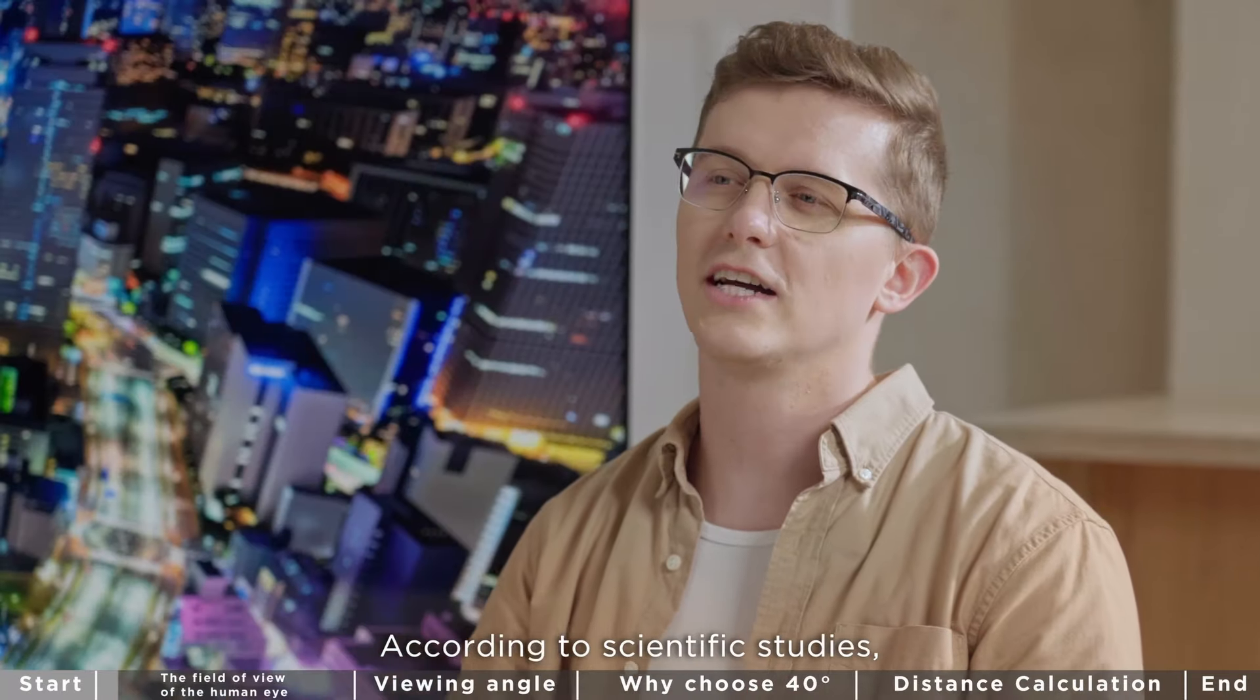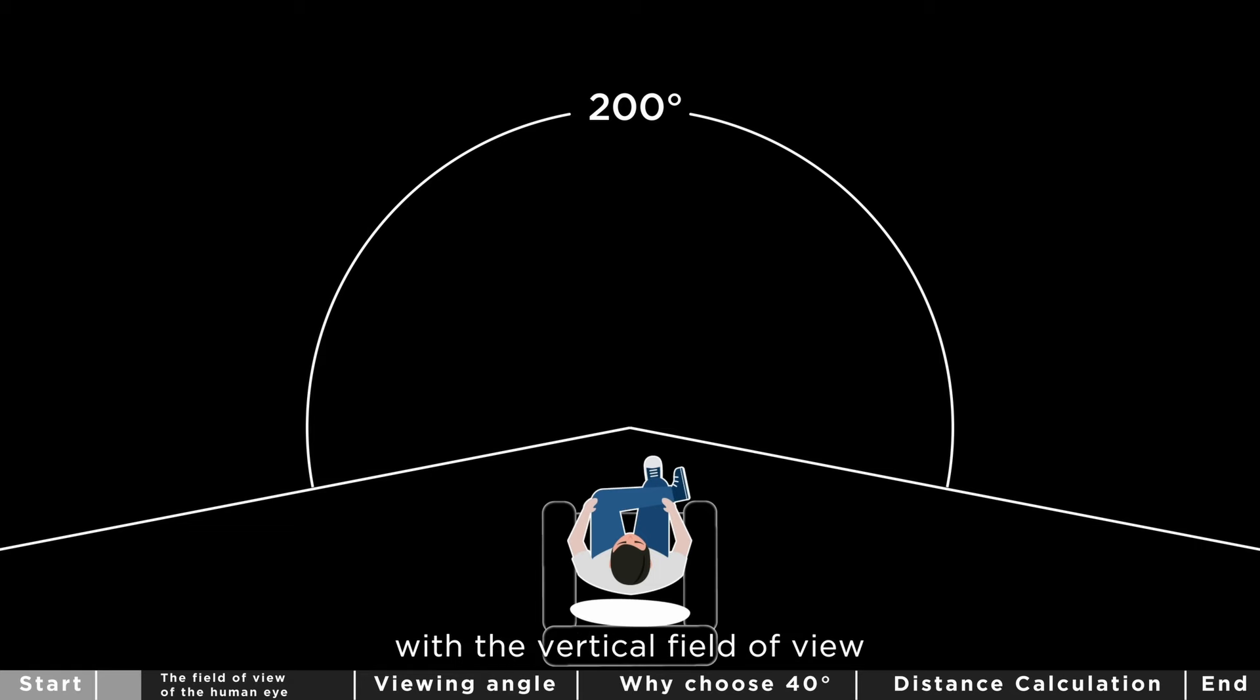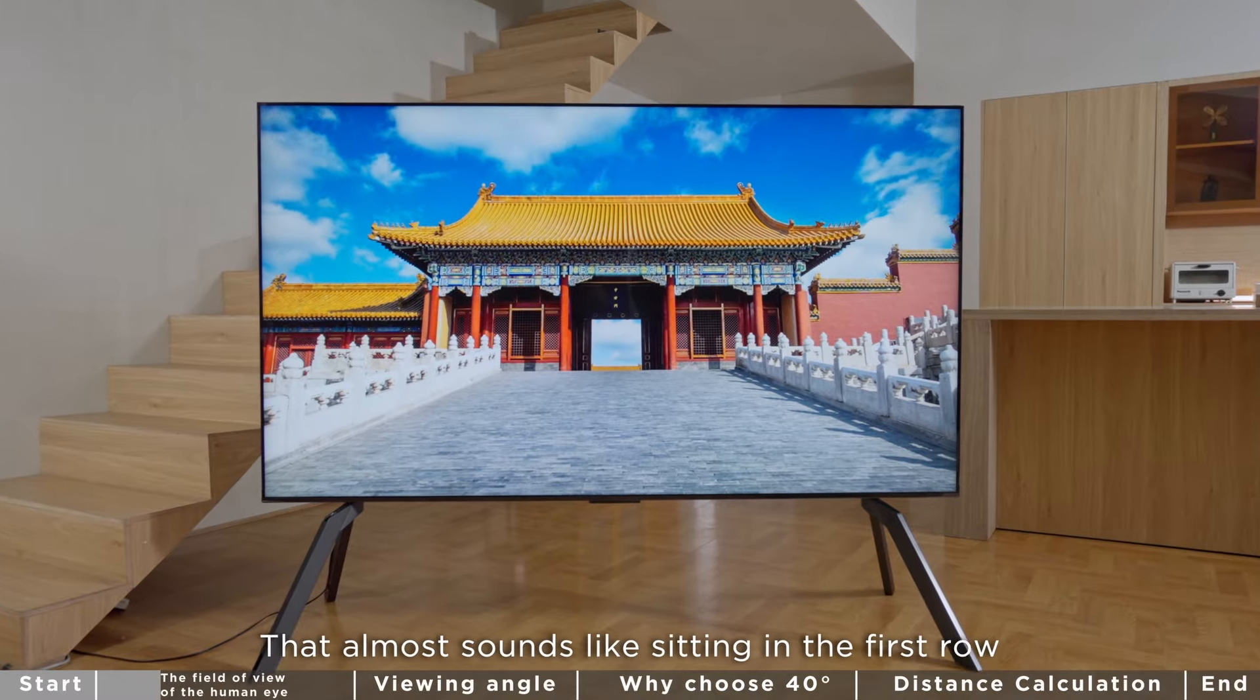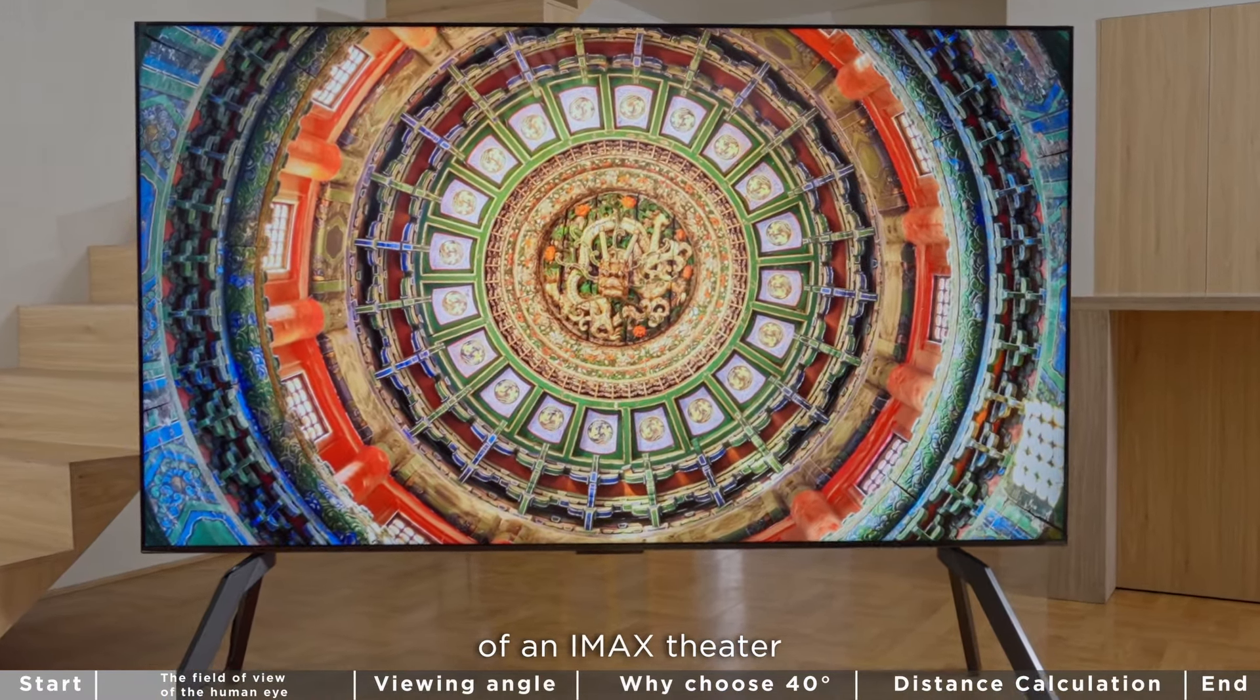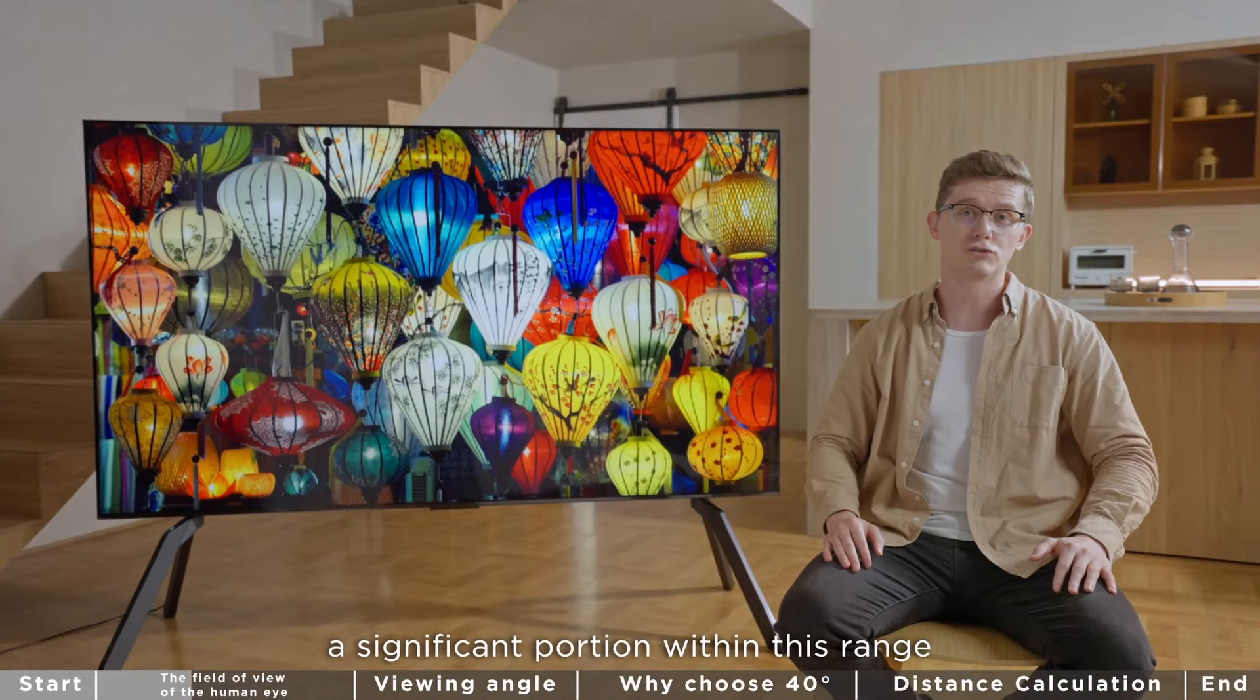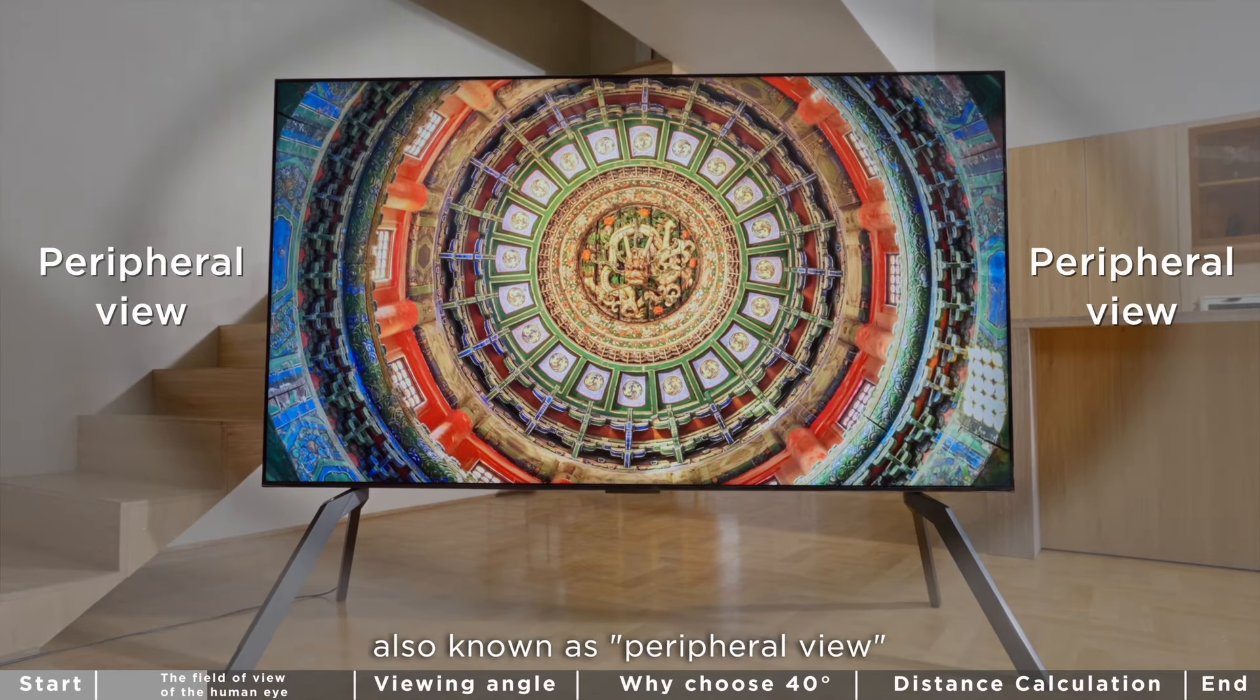According to scientific studies, the human eye's horizontal field of view is approximately 200 degrees with the vertical field of view being approximately 150 degrees. That almost sounds like sitting in the first row of an IMAX theater. Well in reality, a significant portion within this range is peripheral vision, also known as peripheral view.